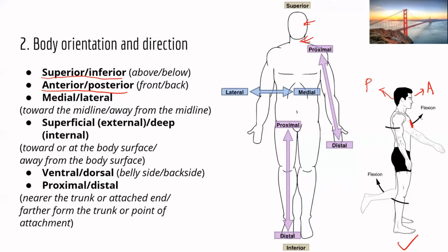Some of the ribs articulate or form joints with the sternum. On the back you have your vertebrae bones. So you can say the sternum is anterior to the vertebrae, and the vertebrae are posterior to the sternum.